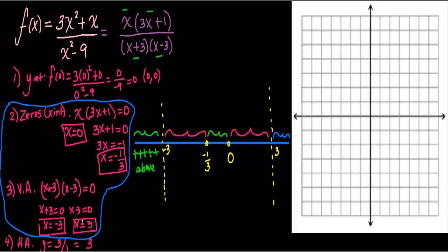For the region from negative 3 to negative one-third, I choose x = negative 2. In the numerator, negative times negative is positive. In the denominator, positive times negative is negative. Positive over negative is negative, so the graph is below the x-axis in this region.